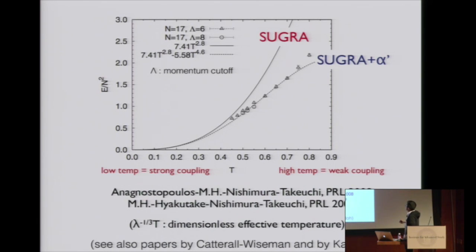Low temperature is strong coupling and high temperature is weak coupling. If we go to low temperature, simulation result from Yang-Mills should go closer to supergravity result. The supergravity result can be calculated from a well-known metric by Horowitz and Strominger. That's 7.41 times T^2.8. Such a strange power can appear because of this factor, naive power counting doesn't work.